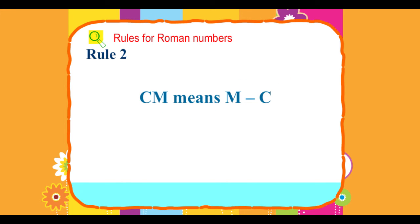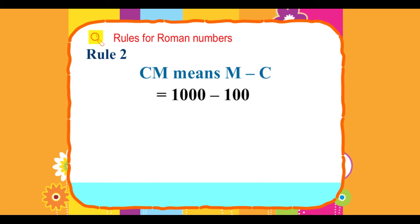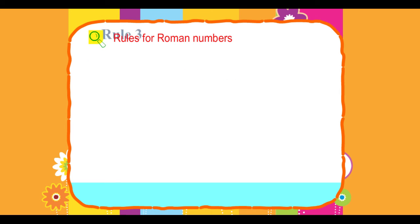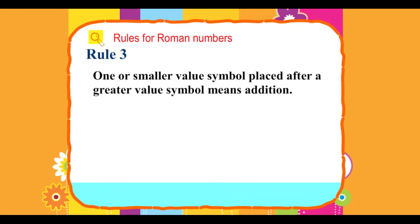CM means M minus C, which equals 1000 minus 100 equals 900. CM equals 900. Rule 3: One or smaller value symbol placed after a greater value symbol means addition.